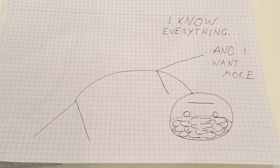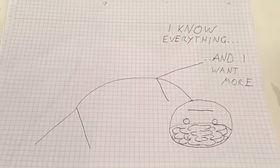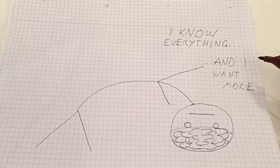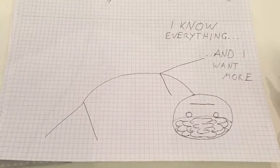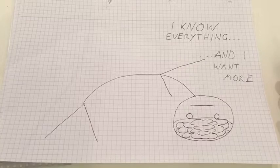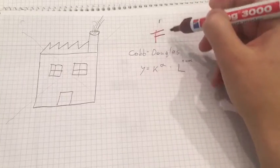The homo economicus' only behavioral assumptions are that he maximizes his utility. He has stable preferences and is fully informed about prices. Furthermore, there exist stable market equilibria. As you can see, these do not really correspond with reality and abstract all social and psychological factors of human behavior.